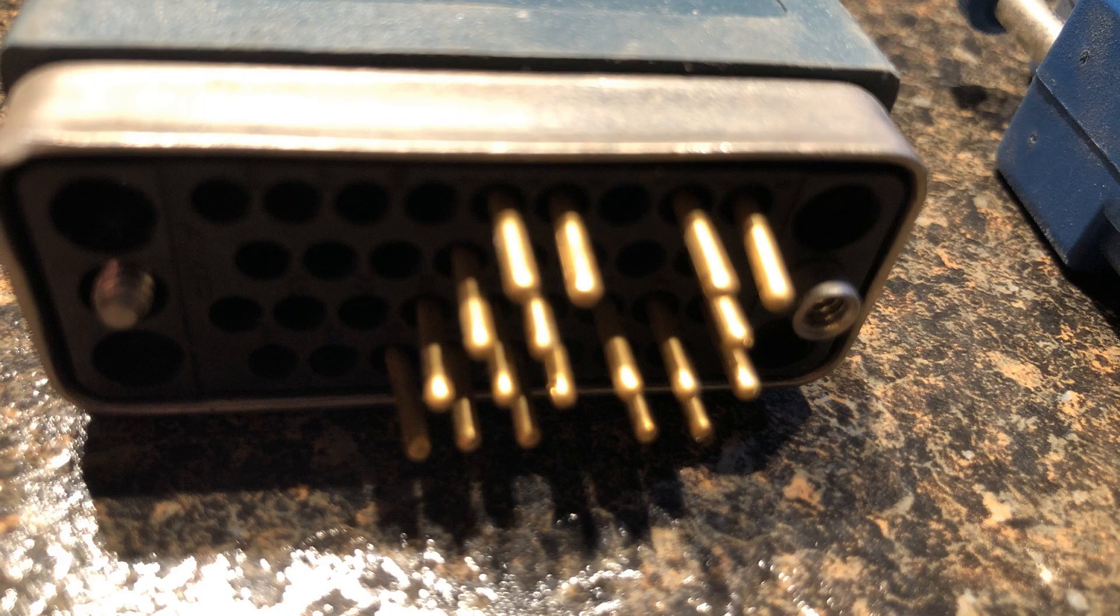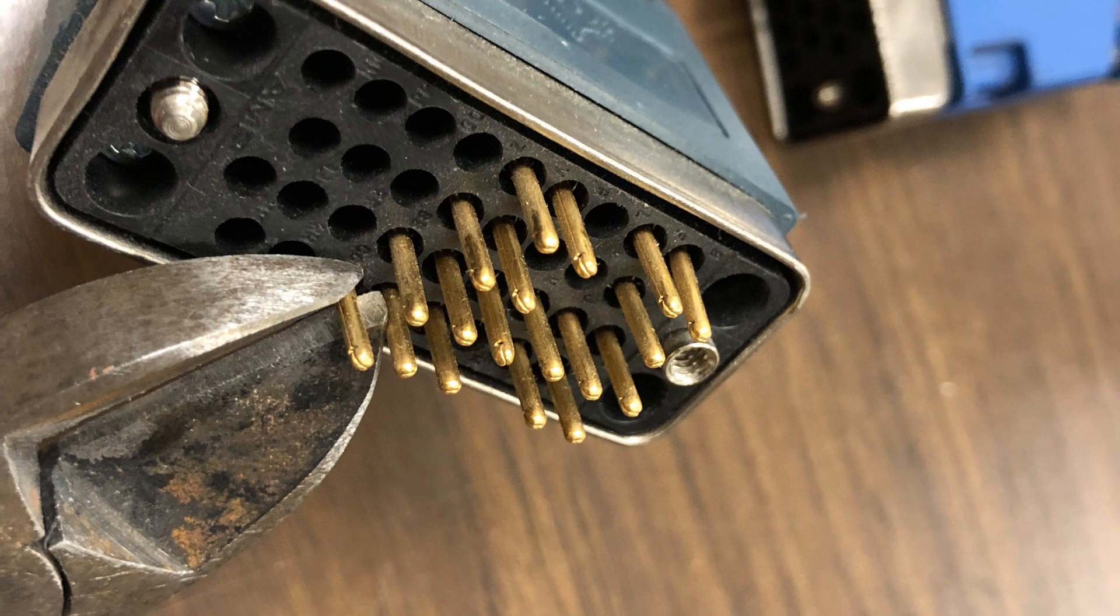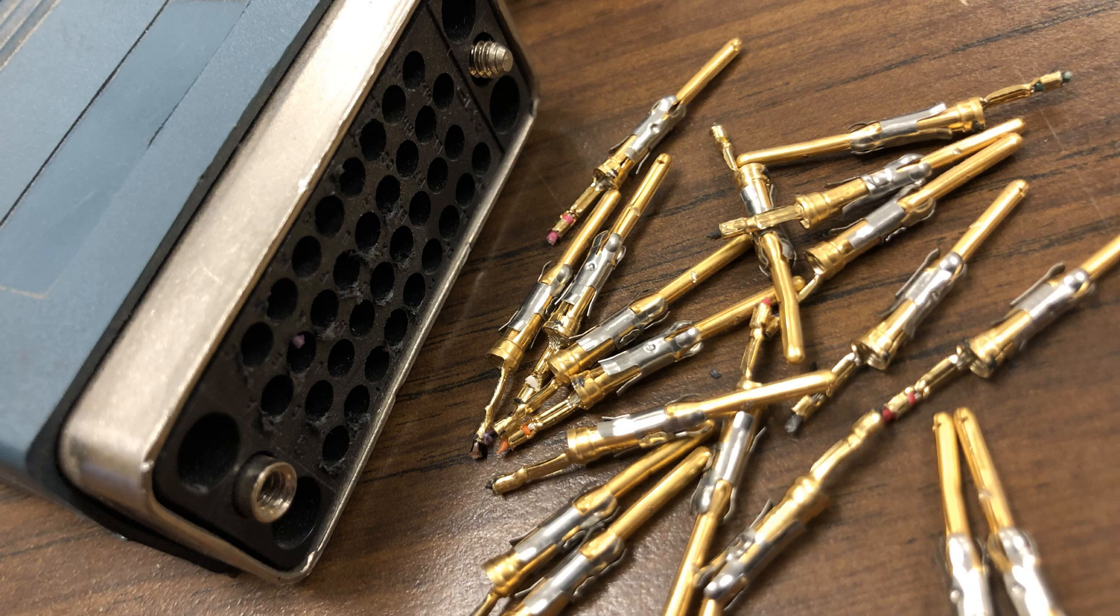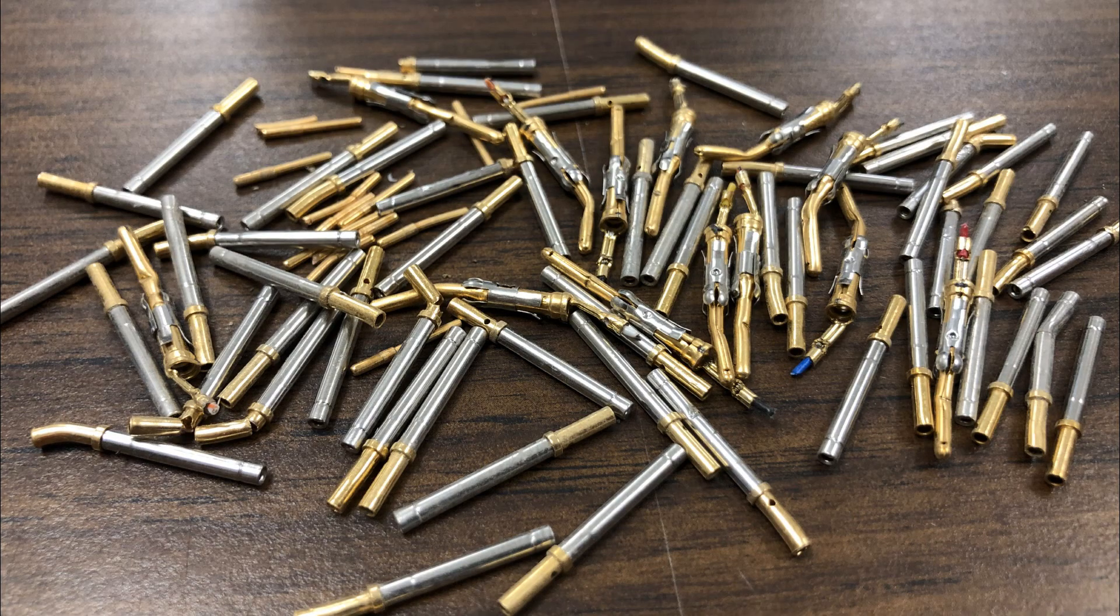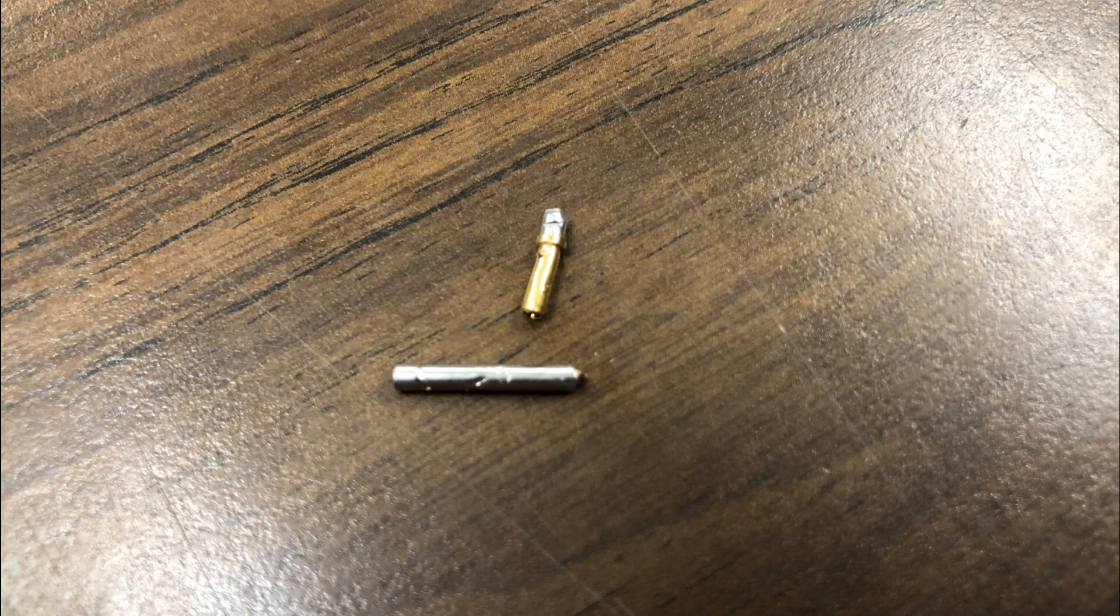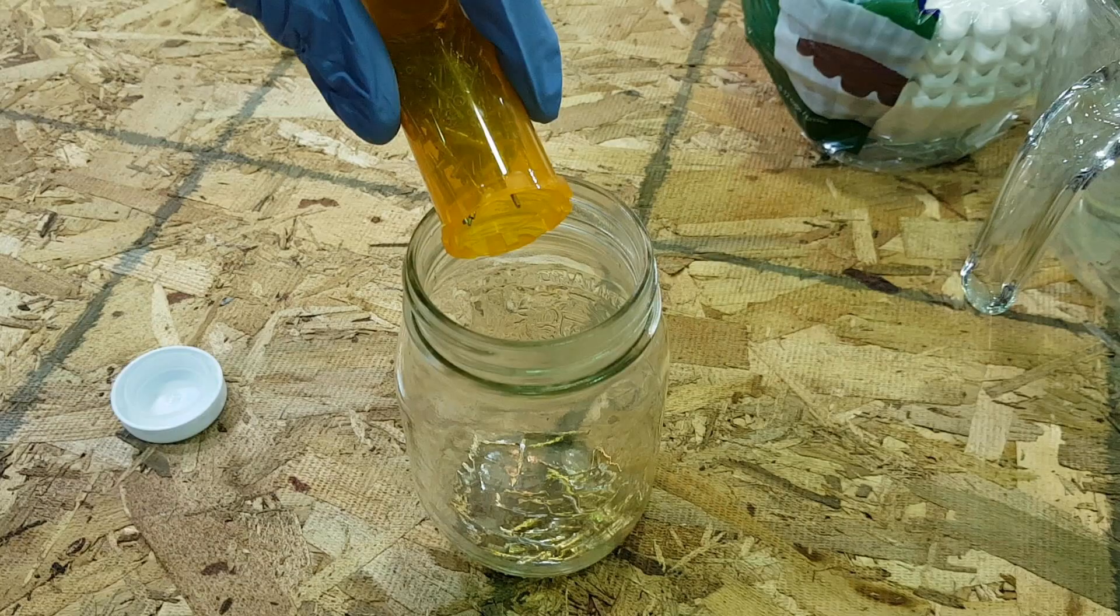So step one in this process is fairly simple. You're going to want to remove the pins from whatever they're attached to. Typically what I do is grab a hold of them with a pair of side cutters and pull out of the cable. Once you've pulled the pins out you should be able to see a fairly distinct dividing line where the gold plating ends. You're going to want to cut each pin before that dividing line so you get all the gold plating but you don't need all that excess metal taking up the materials in your process.